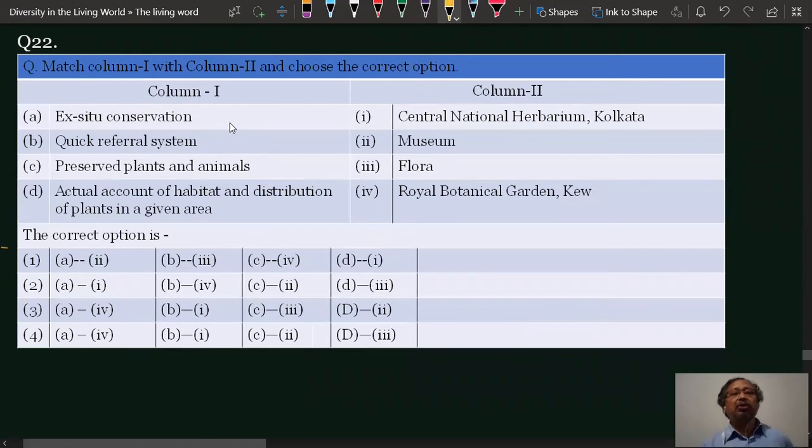This is a matching of column 1 and column 2. Here in column 1, there is ex situ conservation. Ex situ conservation means outside the natural habitat - keeping organisms outside the natural habitat.